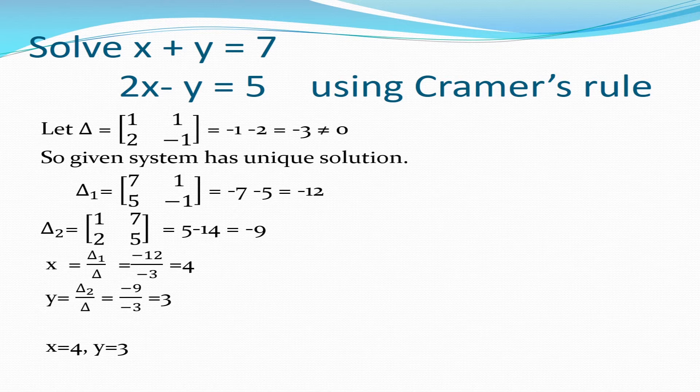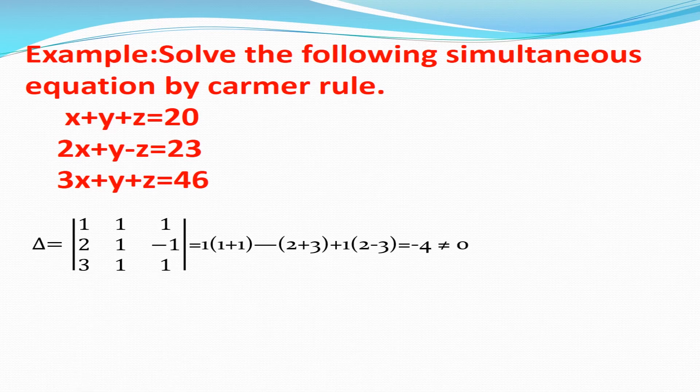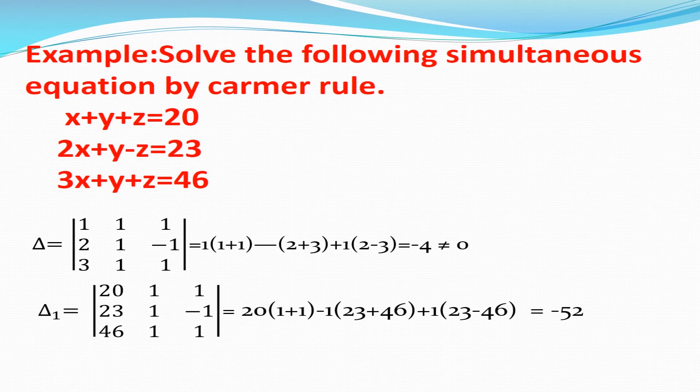Hence we get the solution. Let us take example in 3 variables, solve x plus y plus z is equal to 20, 2 into x plus y minus z is equal to 23, 3 into x plus y plus z is equal to 46. As in the last question, we will write the determinant delta by taking coefficients x, y, z as shown in the slide and solving delta is equal to minus 4 which is not equal to 0. Since delta is non-zero, it will have a unique solution.